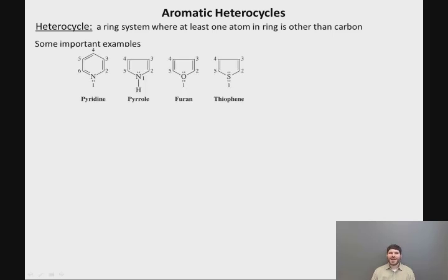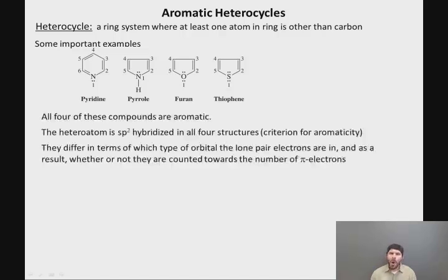Some important examples of aromatic heterocycles would be pyridine, pyrrole, furan, and thiophene. All four of these compounds are aromatic. The heteroatom—the nitrogen, oxygen, or sulfur—is sp2 hybridized in all four structures, which of course is a criterion for aromaticity.